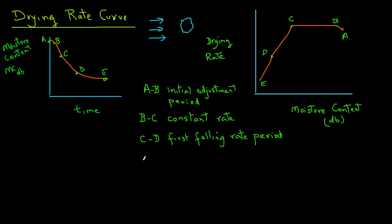However, in certain foods, after they go through some drying, there may be internal changes which may result in a different slope and so we have D to E as the second falling rate period.